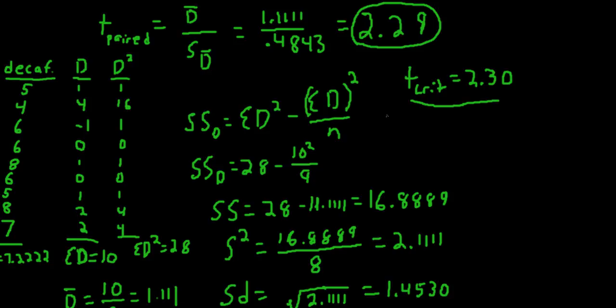Another thing we could take a look at is the effect size. Now one effect size measure is Cohen's D. And one way, not the only way, but one way to compute that in a paired t-test design, is to take D bar and divide it by the standard deviation of the difference scores.